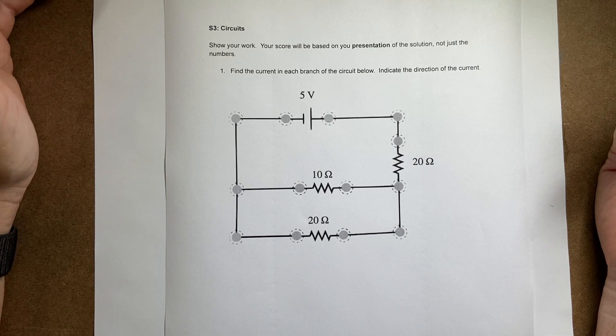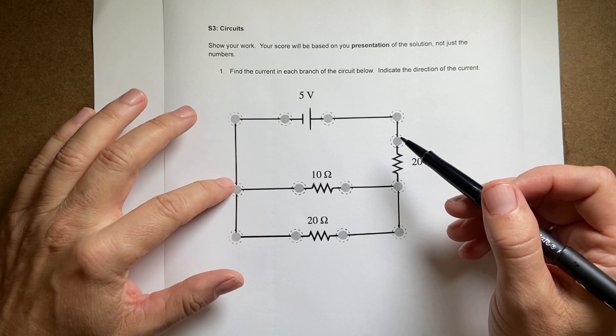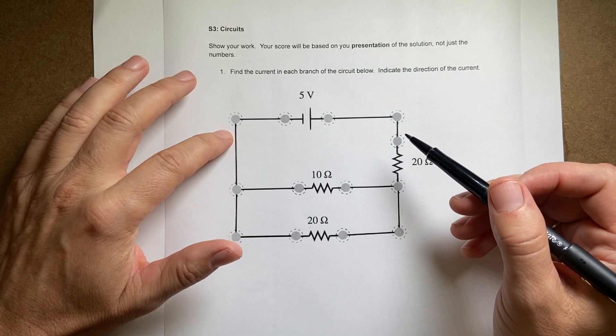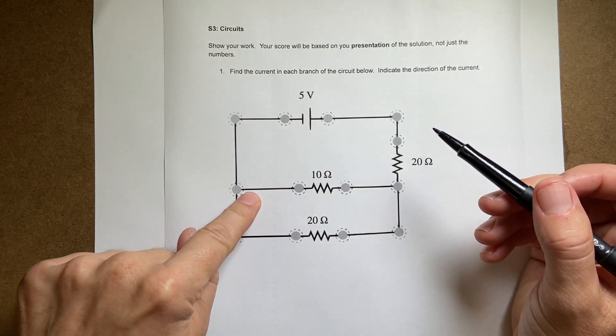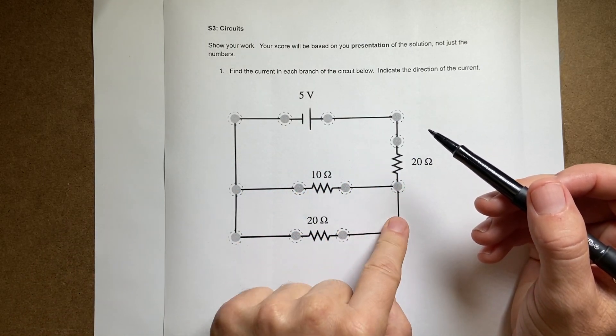So there's actually three branches. A branch would be where a wire goes and doesn't connect to, doesn't split. So this whole thing is a branch, that's a branch and that's a branch.